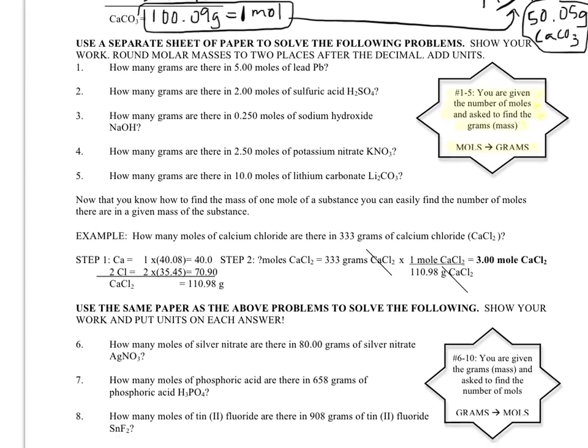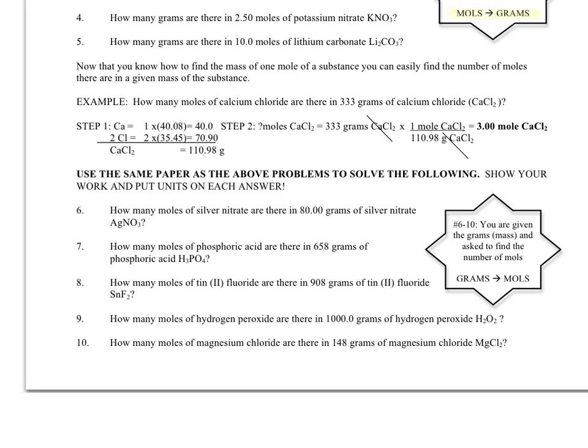That's the first type of problem. Problems 6 through 10 are going to work a little bit differently. In fact, they're going to be just the opposite. So in problems 6 through 10, you're going the other direction. You are given grams, mass, and asked to find the number of moles. So you're going from grams to moles. The opposite of problems 1 through 5. So same technique, you pretty much just have to reverse what you've been doing, so your fraction is going to have reversed top and bottom units.